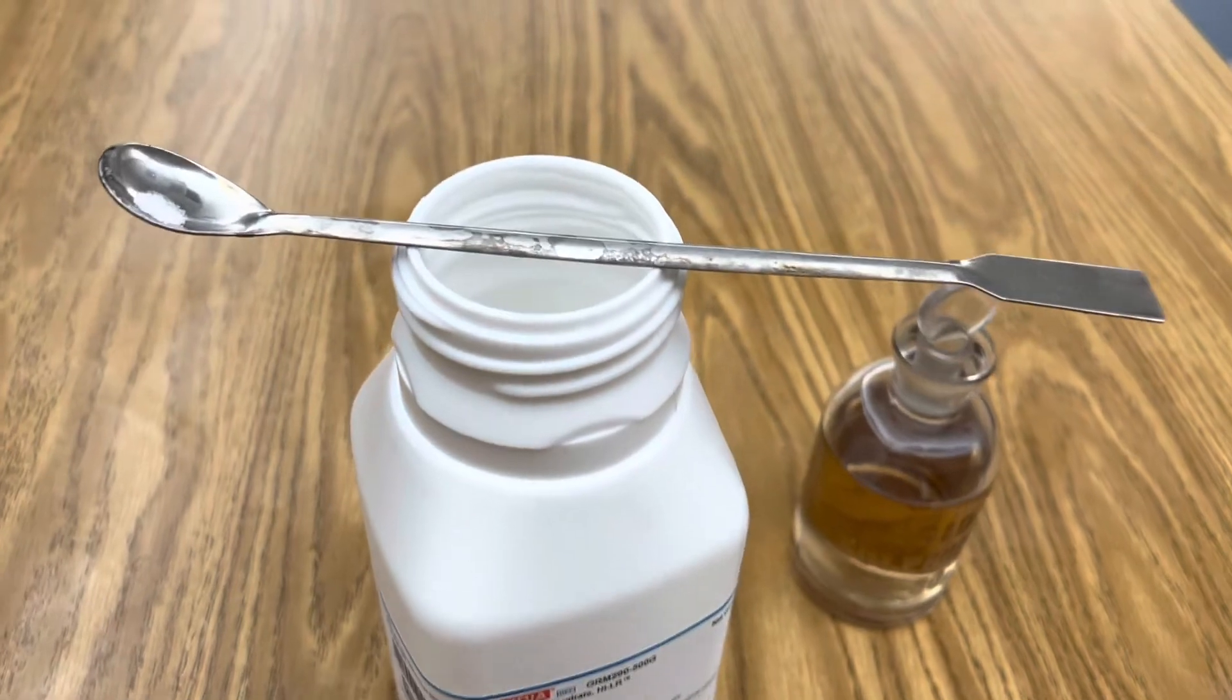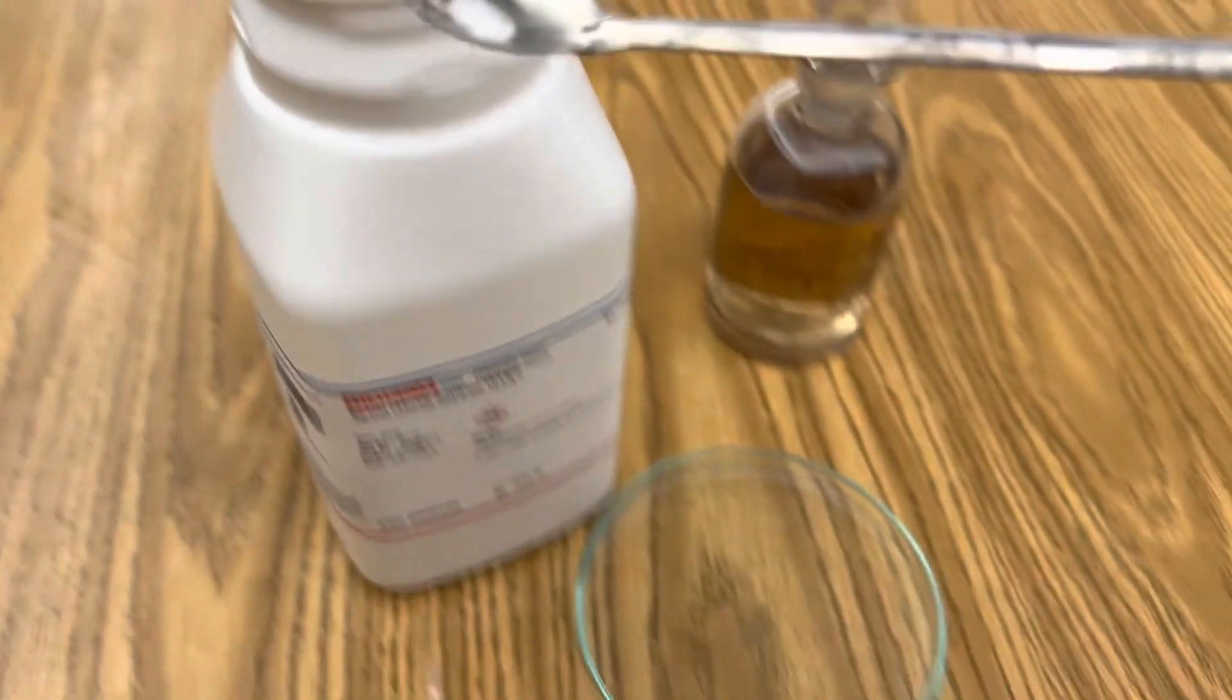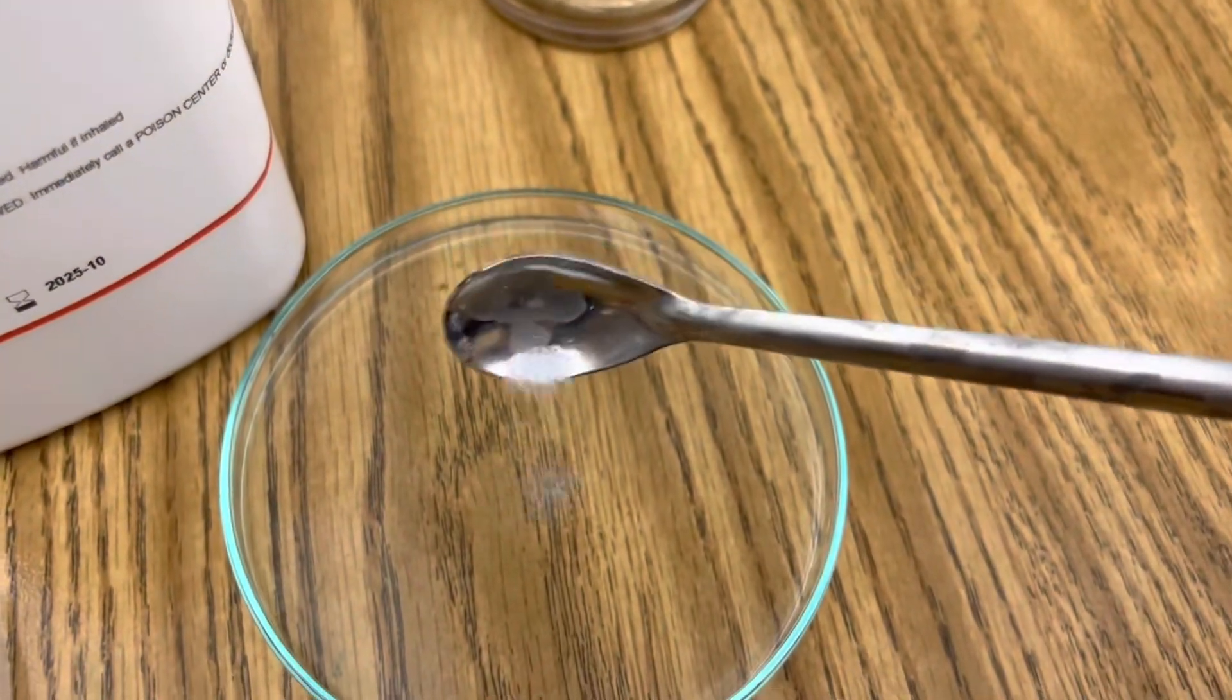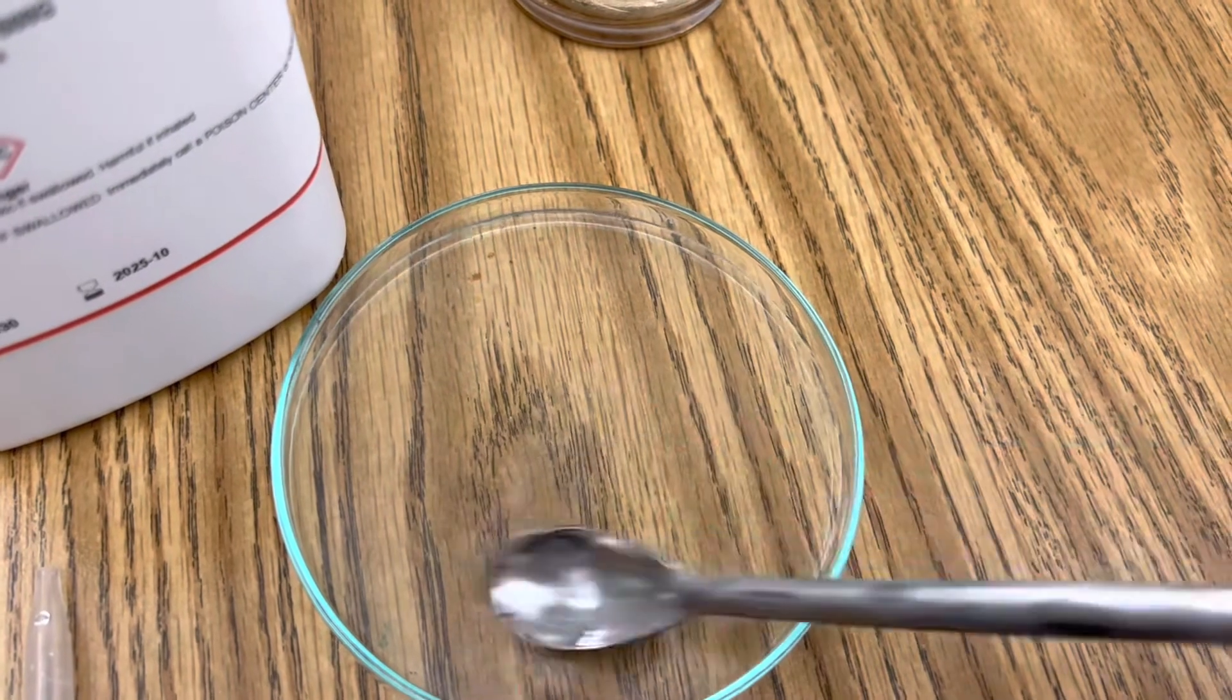To begin, I'm going to create an aqueous solution of barium chloride by just adding one or two grams of barium chloride to my petri dish. I'm going to stir it around until it completely dissolves.